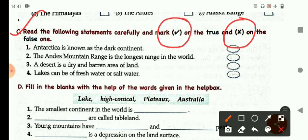And your first statement is Antarctica is known as dark continent and this statement is wrong. So here you will cross it.